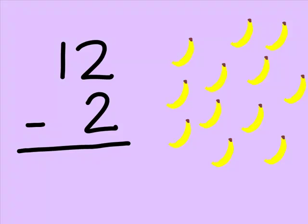Here is one last problem. I have already written down the problem, 12 minus 2, and drawn 12 bananas. There are two ways to solve a problem like this one. For example, we can count the bananas like we have been doing.